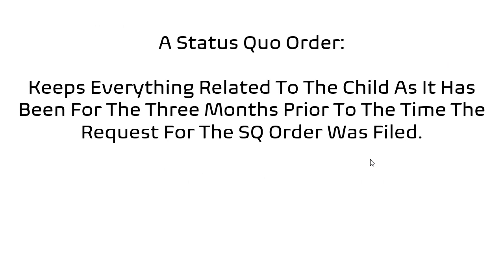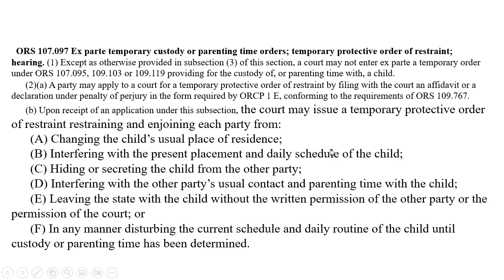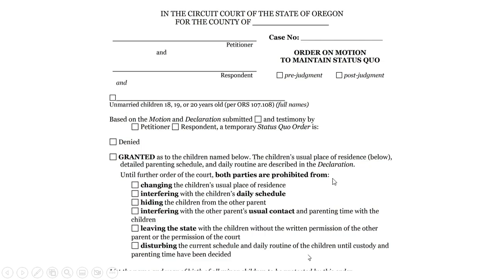A status quo order keeps everything related to the child as it has been for the last three months prior to the time the request for the status quo order was filed. That is the look-back period. There are several ways to get a status quo order in Oregon. One of the statutes is 107-097, and you can see here the things that a status quo order does in regards to the child. If you get a status quo order, this is what your order might look like — it contains that same statutory language but in the form of an order.